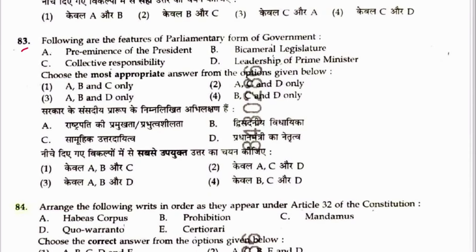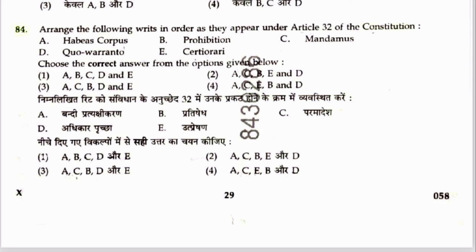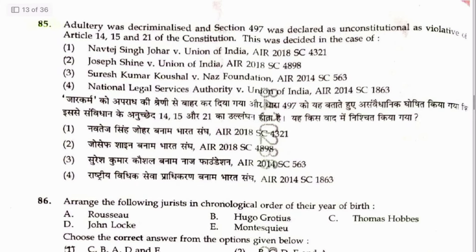Question 83: Features of the parliamentary form of government include: pre-eminence of Prime Minister, bicameral legislature, leadership of Prime Minister, collective responsibility. So B, C, and D are correct. Answer is 4. Question 84: Arrange prerogative writs — Certiorari, then Prohibition, then Mandamus, then Quo Warranto, giving sequence ACBD. Answer is 3.